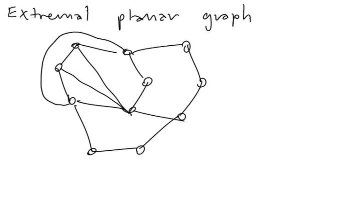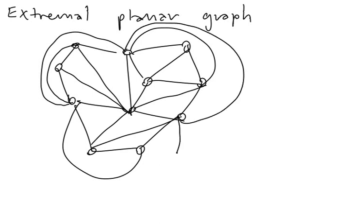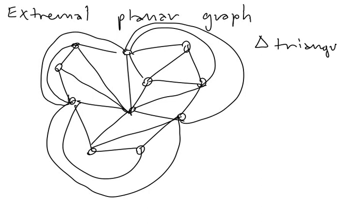We proceed like this for some time, and after some time we end up with a graph which is a triangulation, something like this. This is called almost a triangulation, because the outer face is now big, so we need to add more edges to it. It's not actually so true that just planarity is enough to make things nicer. Now it should be a triangulation — we add edges and obtain something called a triangulation, meaning that every face is a triangle.